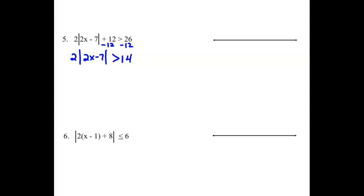Our next one is an inequality, and notice that there are pieces on the left side not inside the absolute value bar — we referred to those as the guards. We need to get rid of them, so our first step is to subtract the 12. That gives us the expression being greater than 14. Dividing out the 2 from the front, we have the absolute value of 2x minus 7 having to be greater than 7. Now all the guards are gone and we can break it out.